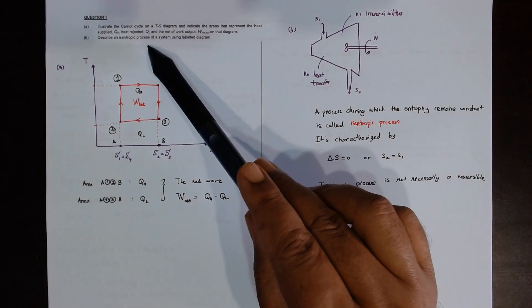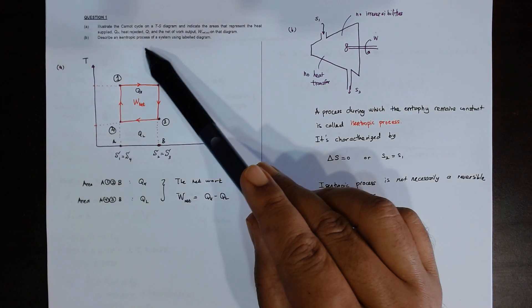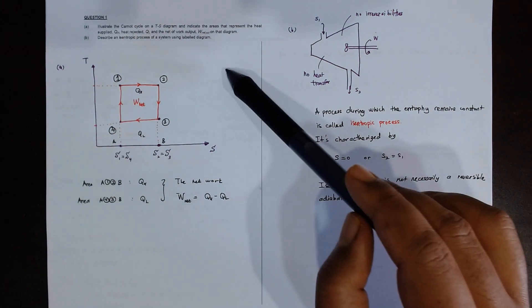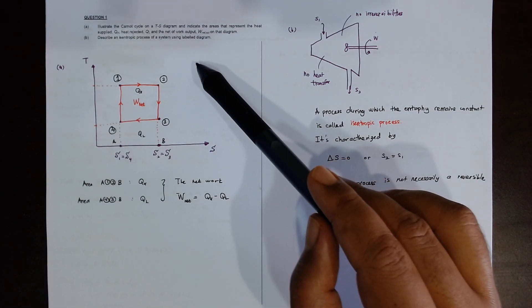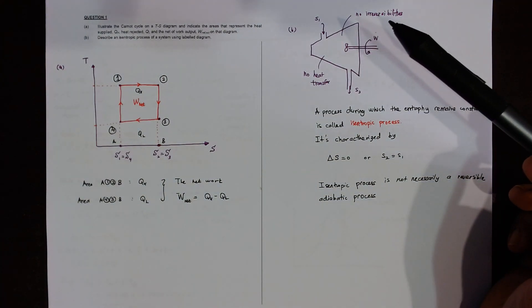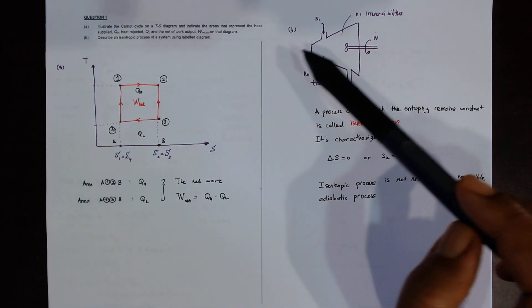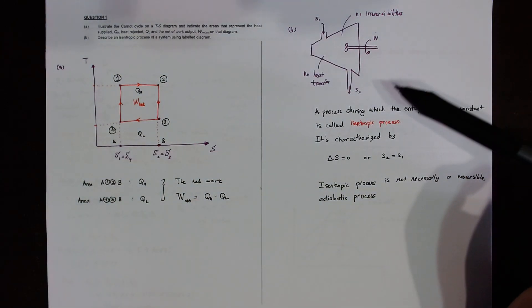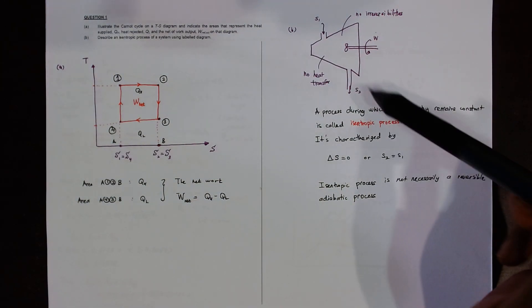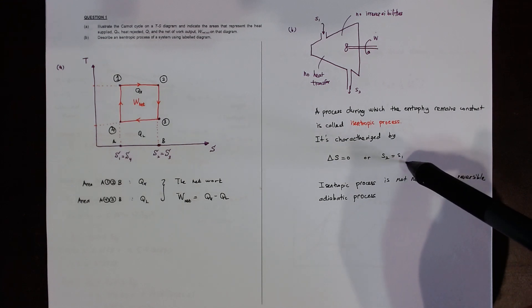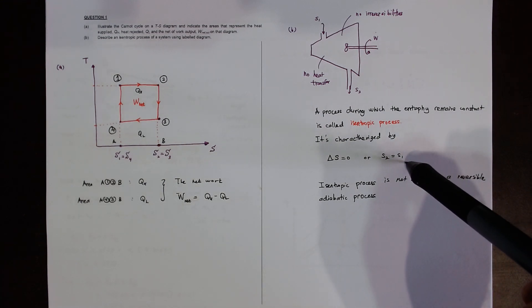So the second question, describe an isentropic process for a system using label diagram. A lot of the questions later on will be discussed in this chapter is related to this isentropic. When isentropic, that means what? The entropy exit same as the entropy inlet.